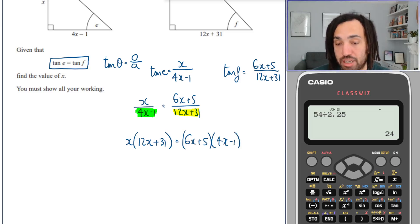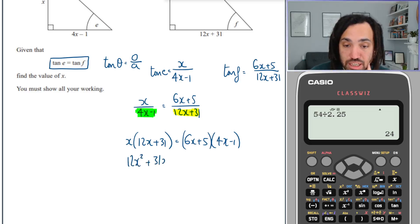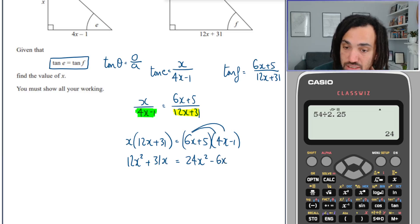This gives me 12x squared plus 31x when I multiply out those brackets. When I times up these brackets, I'm going to get 24x squared, minus 6x, plus 20x, and minus 5.